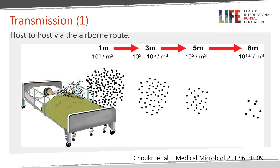This also means that the place you catch Pneumocystis is from another human being. Experiments using molecular techniques have measured spores in the air around infected patients: at about one metre, there are 10⁴ spores per cubic metre of air; at three metres it drops to around 10³–10⁵; at five metres it's about 100; and at eight metres it is still detectable. In a hospital ward, a patient with Pneumocystis pneumonia can transmit to a neighbouring patient with AIDS. Outbreaks have been described worldwide in transplant patients — particularly kidney transplant patients attending outpatient monitoring.